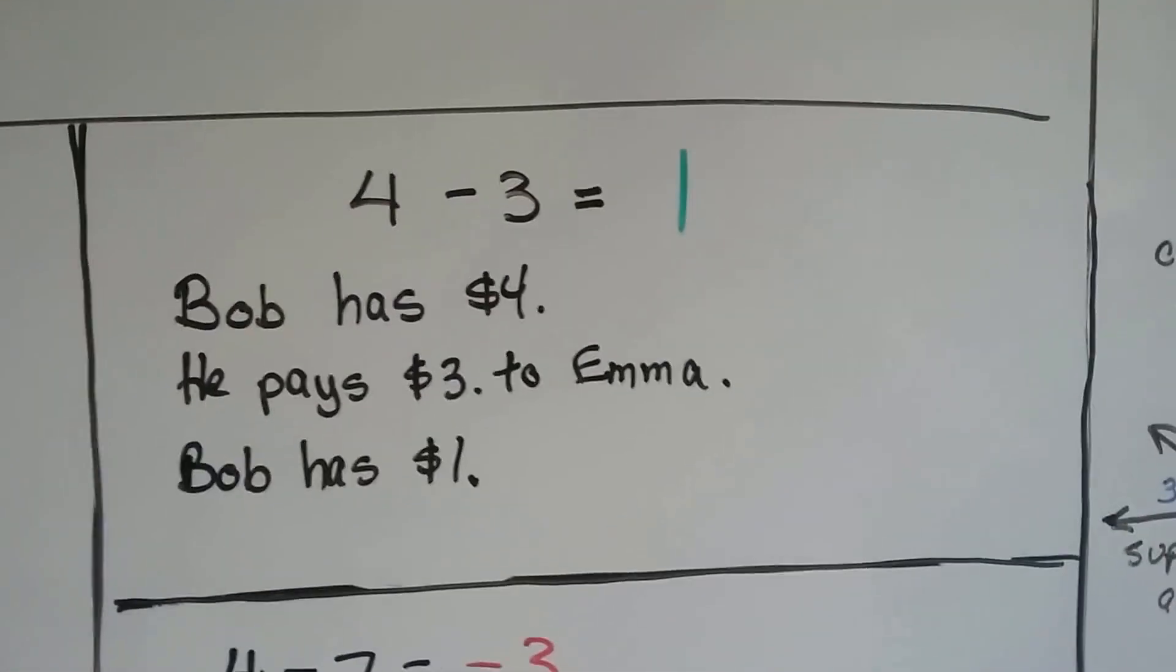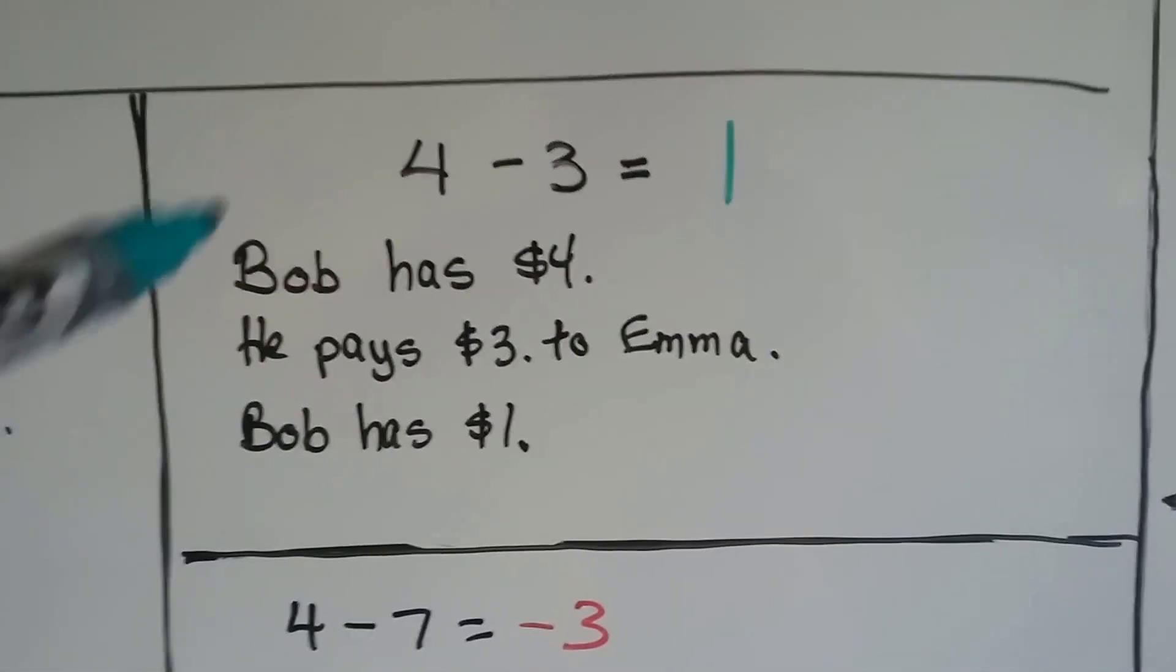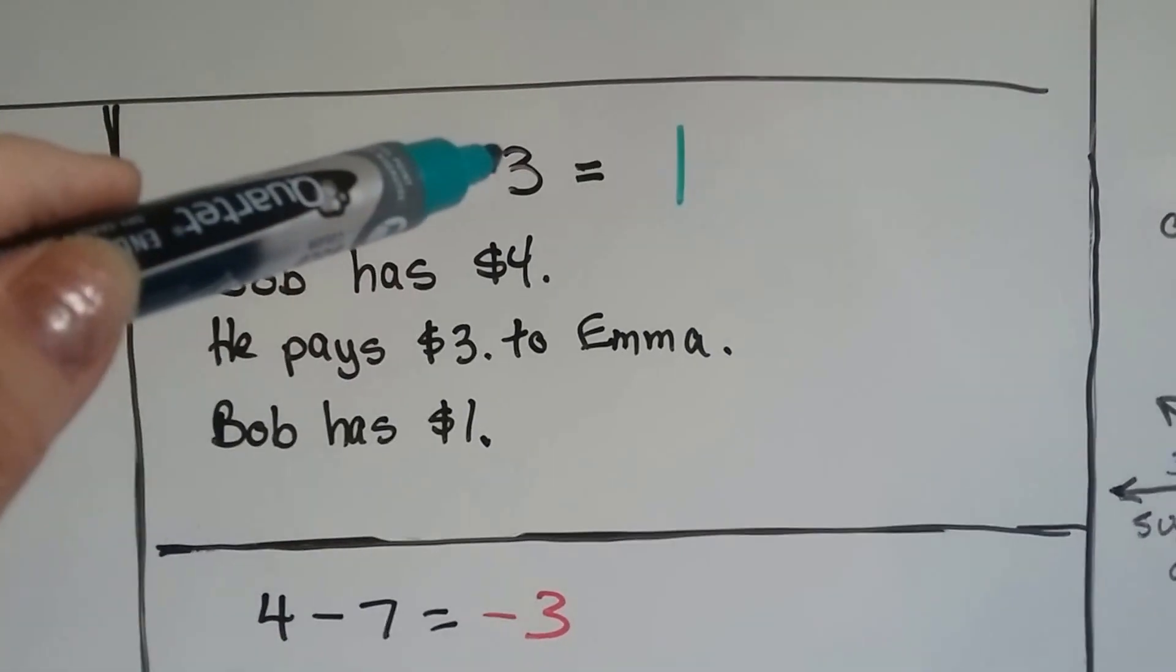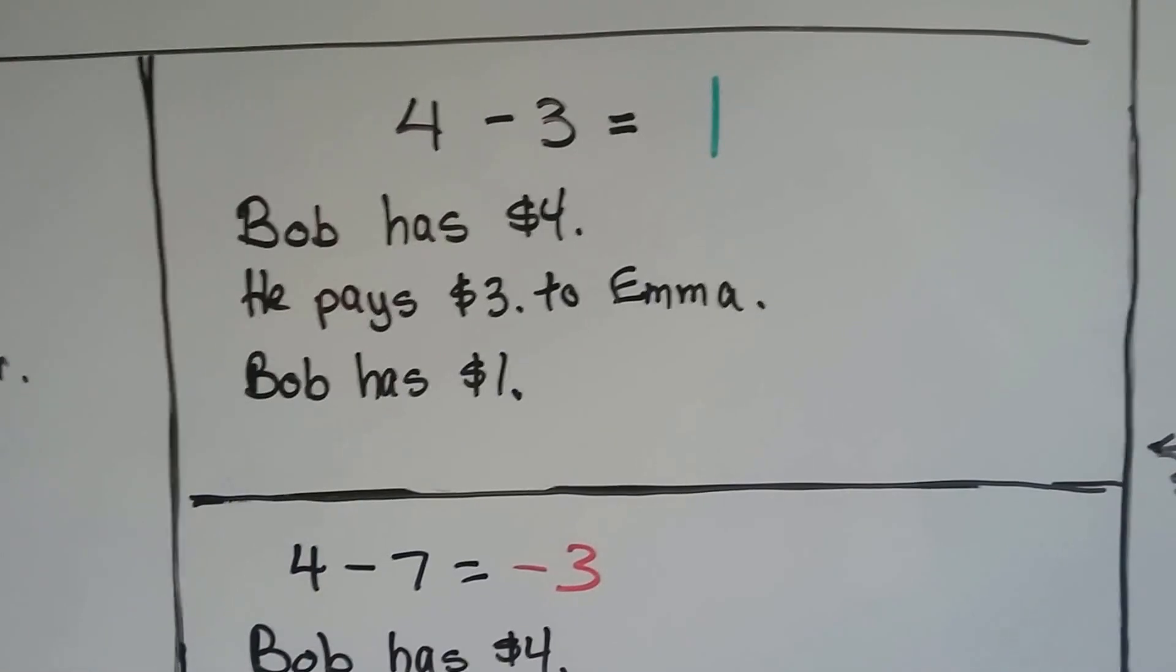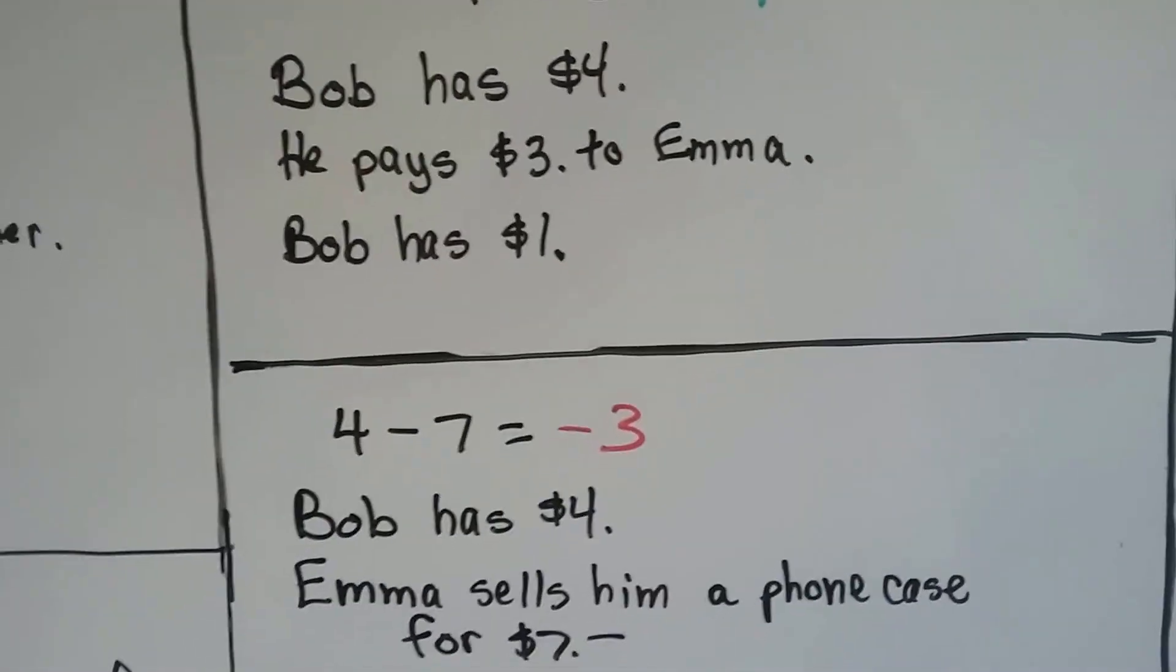This is the easy one to keep our brain going. Bob has $4. He pays $3 to Emma. Now he's got $1. That's the kindergarten math that we all should know. But we have to keep our brain going.